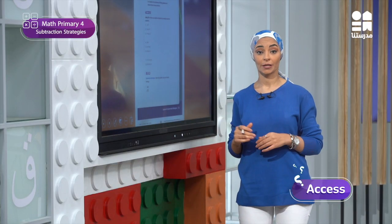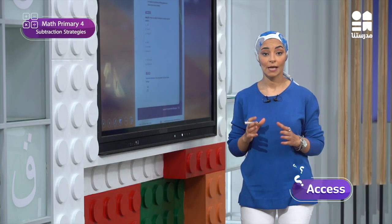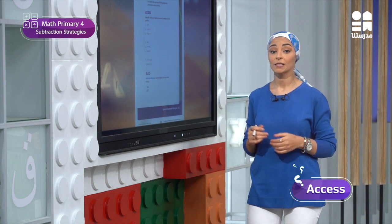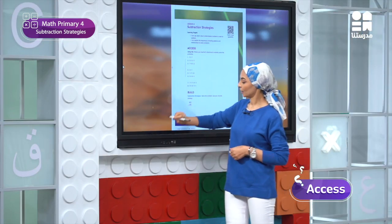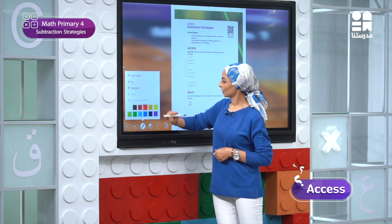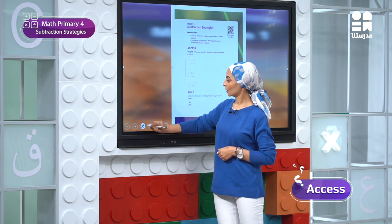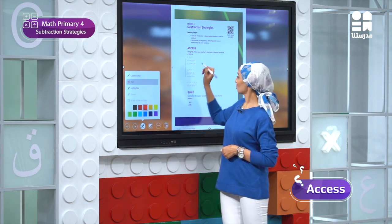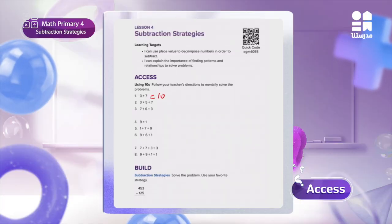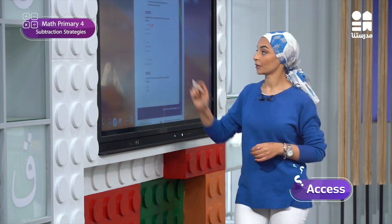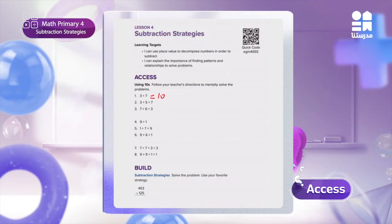In number 1, he added 7, 2, and 3. He added 7 plus 3, and the answer was 10. Then he noticed that there were 3 and 7 in number 2 as well — number 1: 3 plus 7.